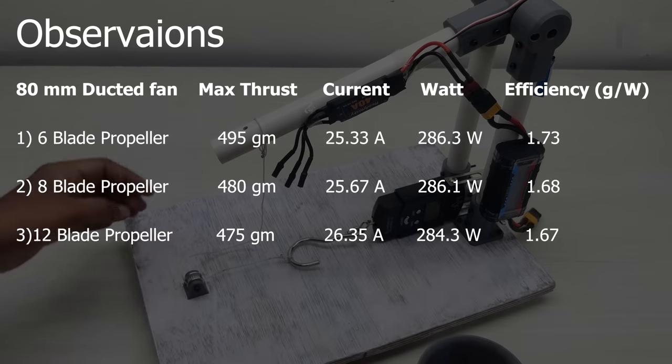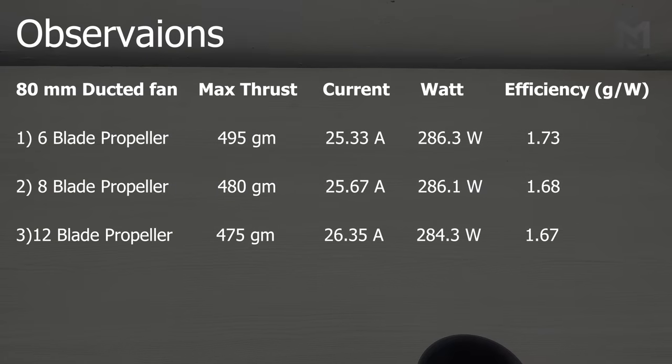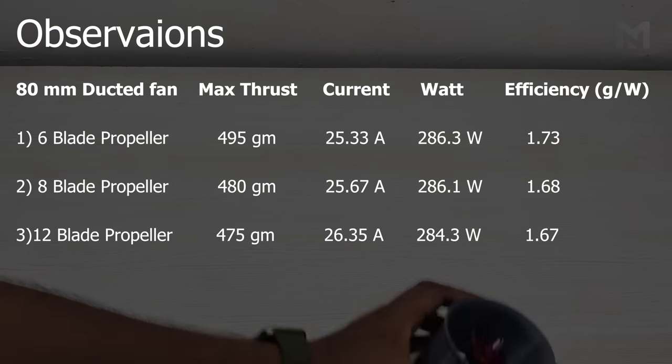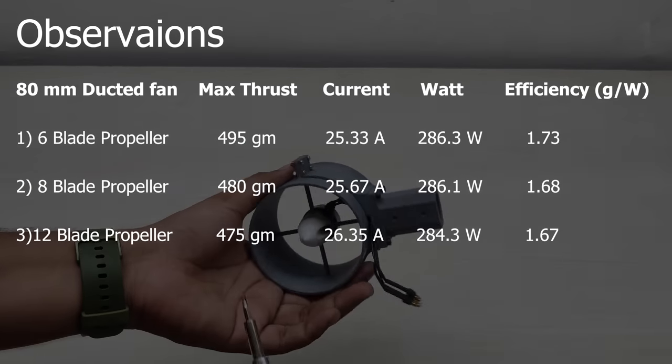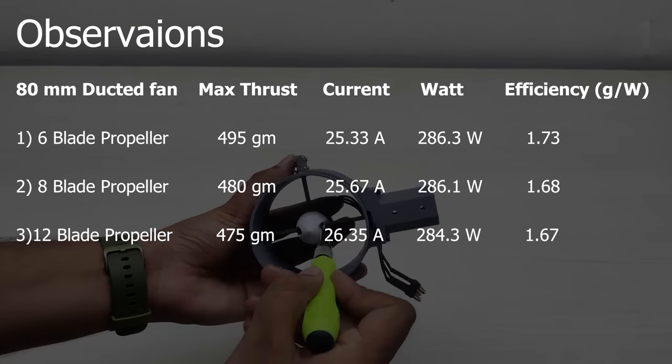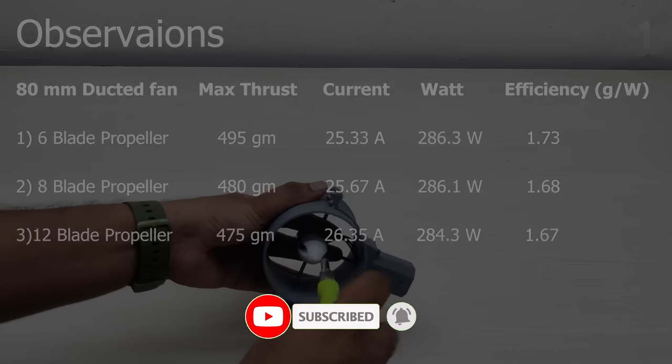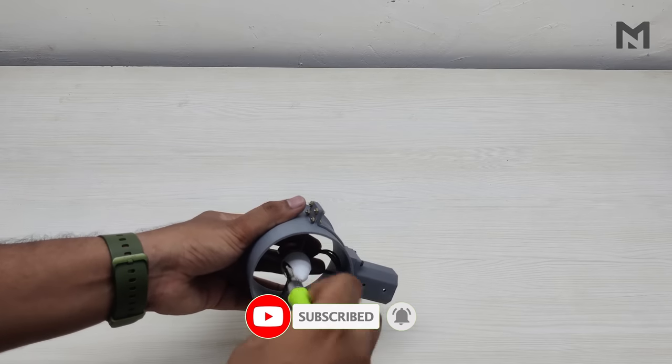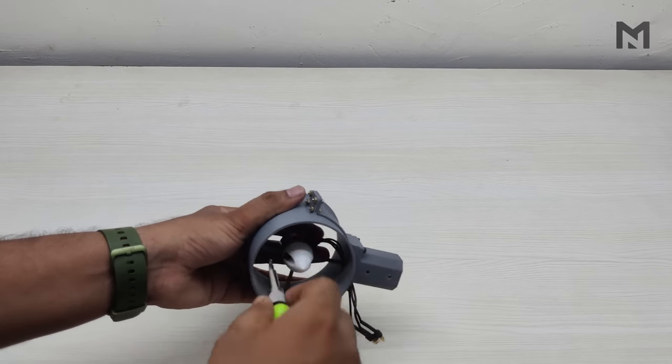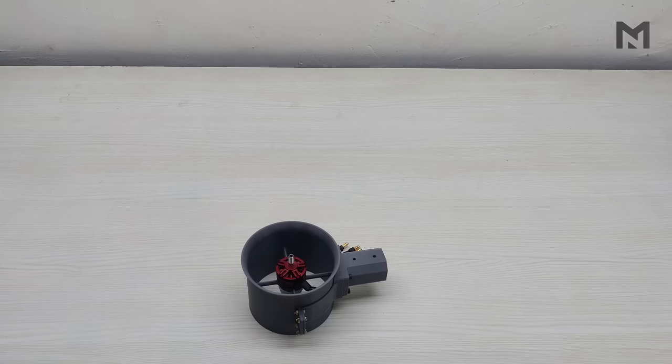I have also tested this EDF with a three-bladed propeller, but the thrust wasn't even enough to lift the arm, so I've skipped that part in the video. Next time I will only put up an EDF video if its maximum thrust and efficiency is greater than this one. Don't forget to subscribe so you won't miss that video. If you enjoyed this video, then give it a thumbs up or comment for any suggestion. Make sure to check my other videos. Thanks for watching and have a nice day.